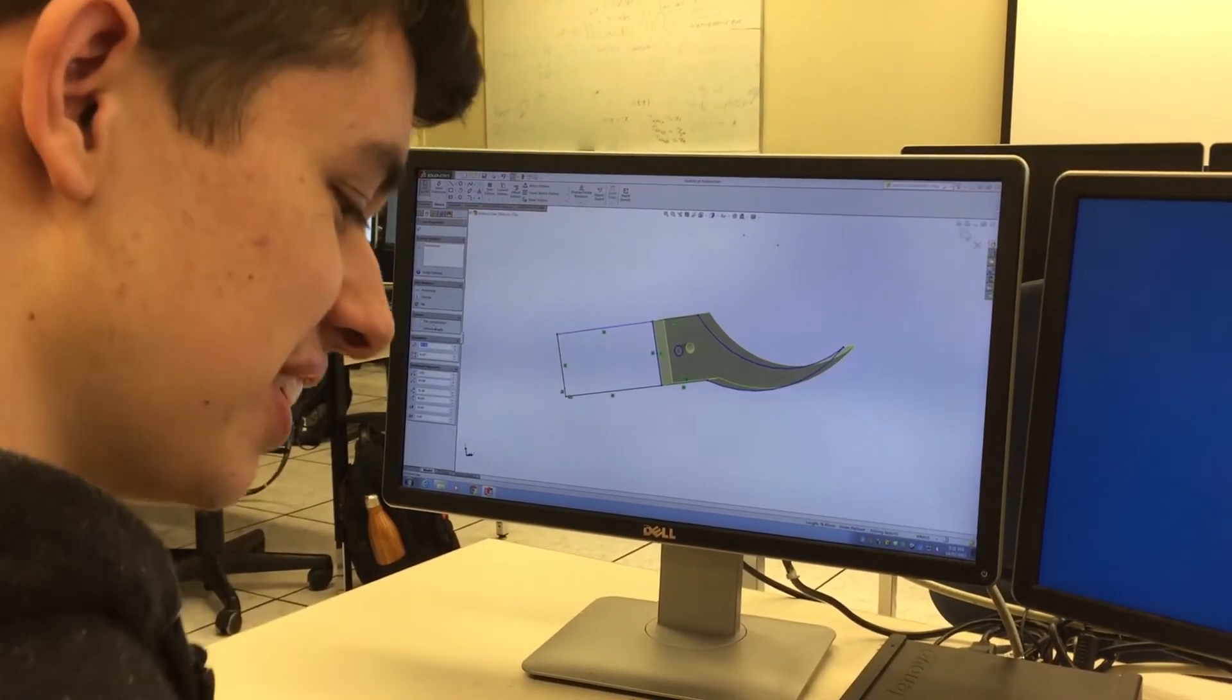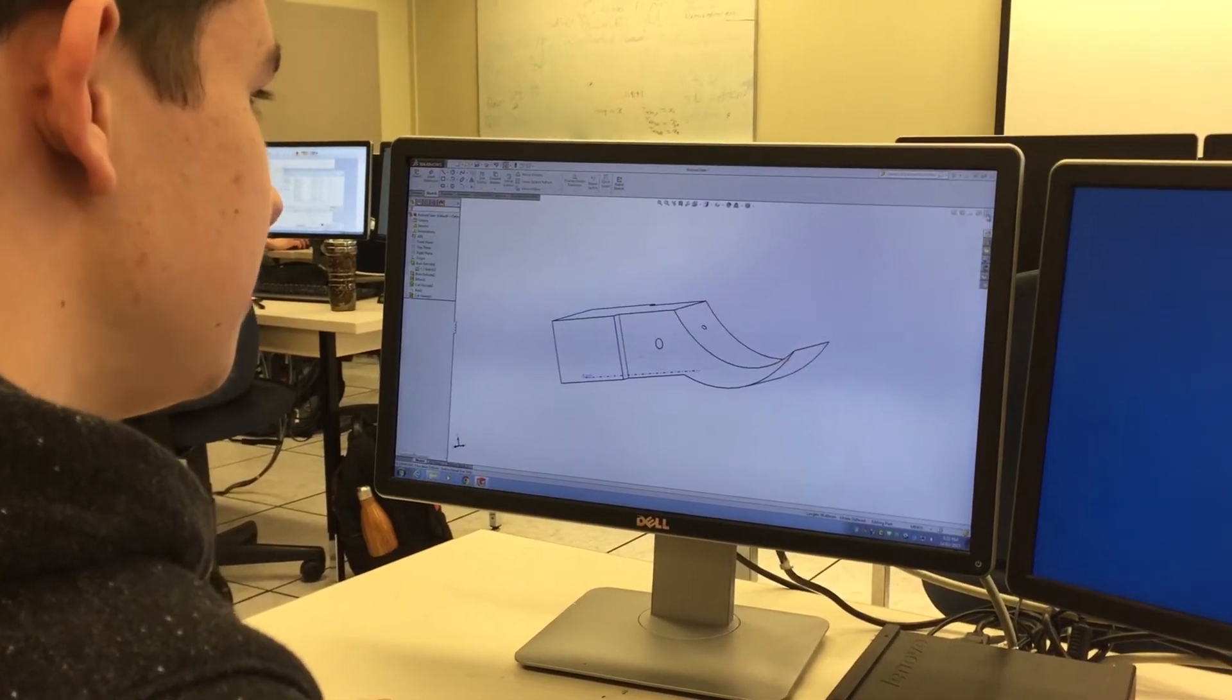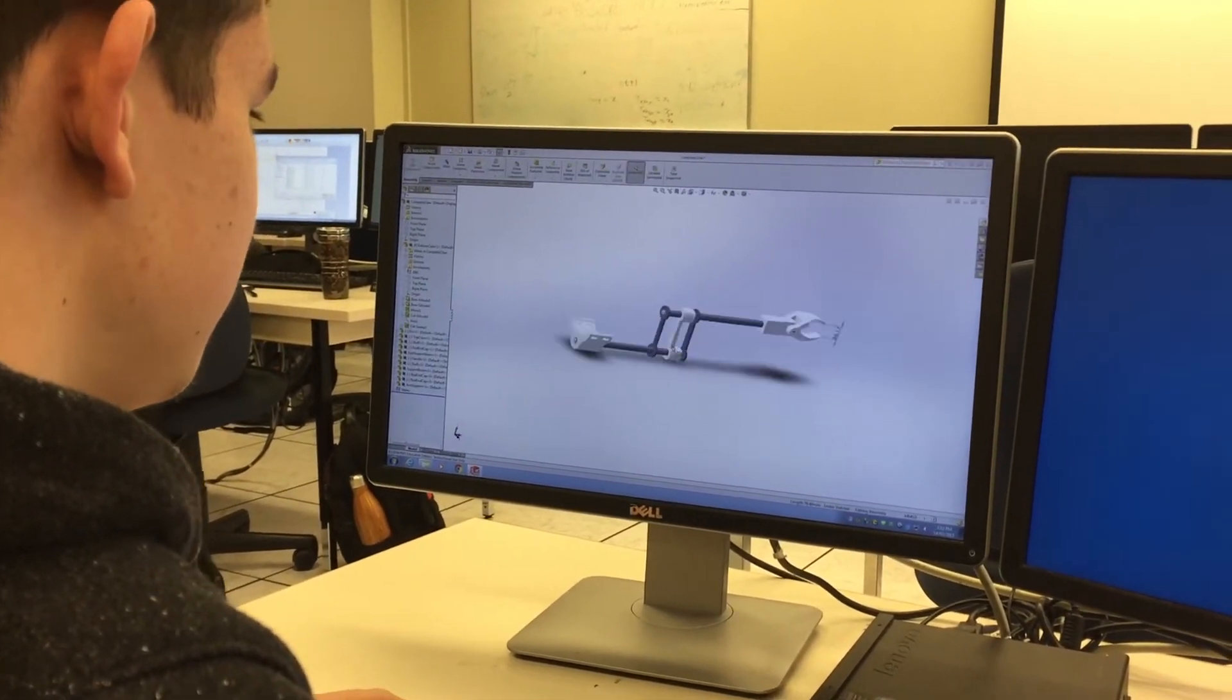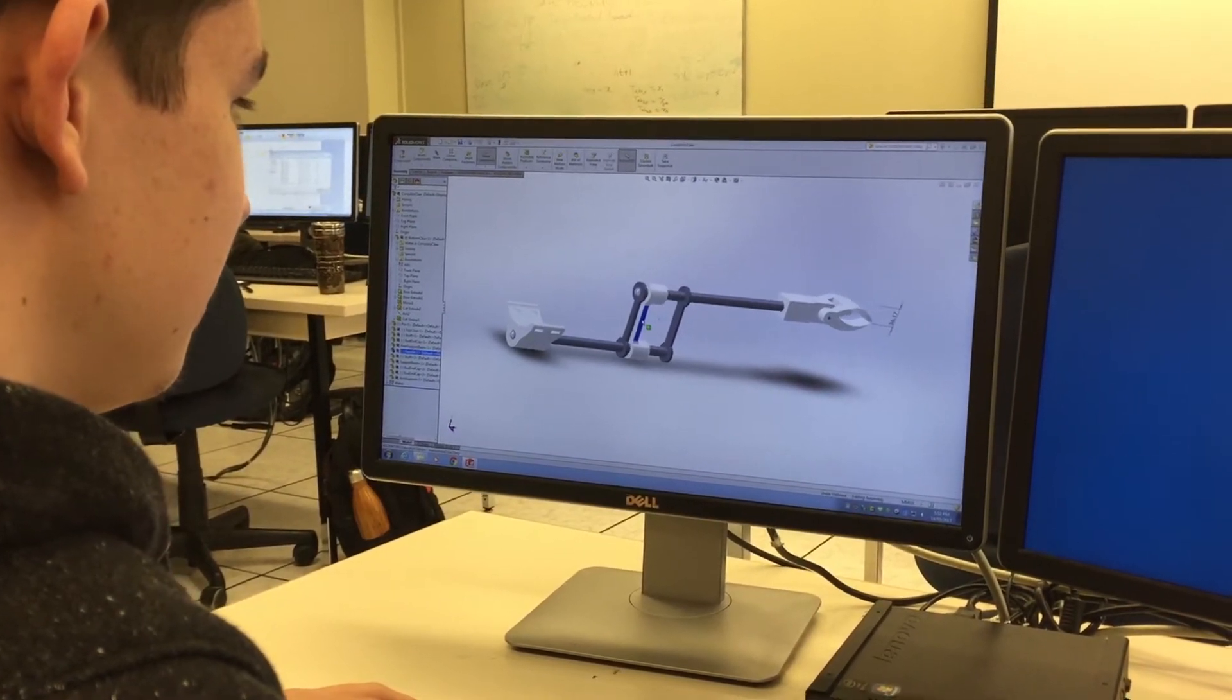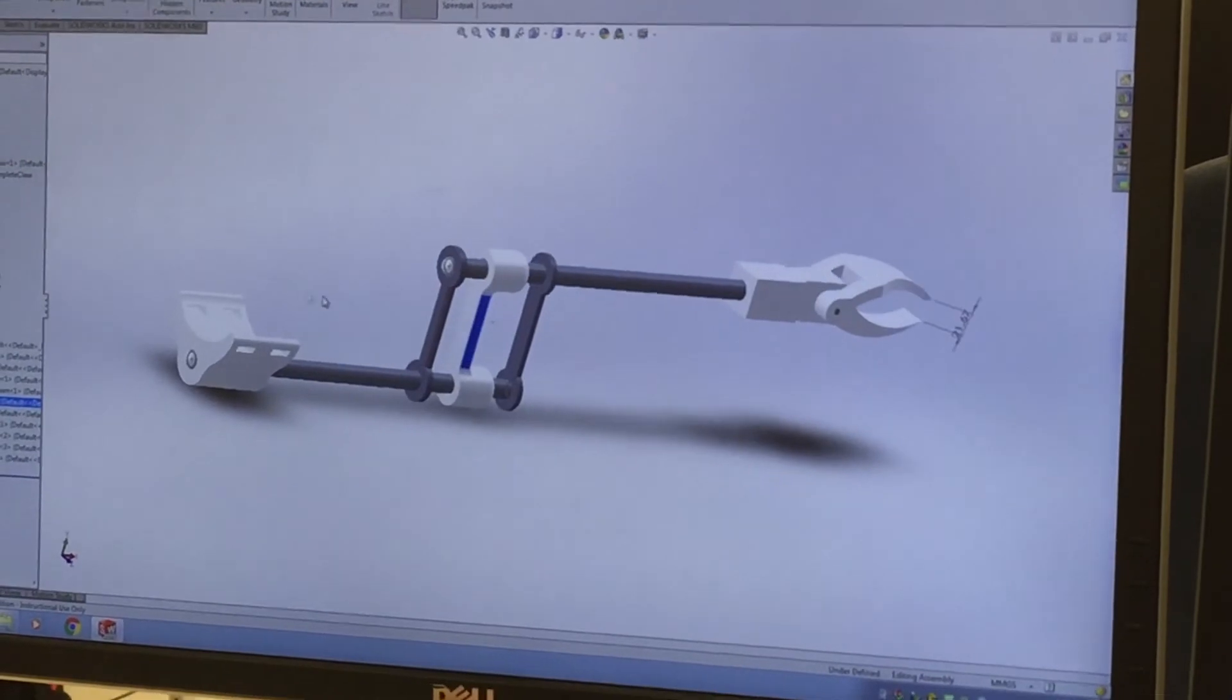At last, we were ready to begin constructing our prototype based on our set of drawings. The shape and dimensions of some of our parts posed some unique challenges. They could only be created through computerized 3D modeling and then either laser cut or 3D printed.